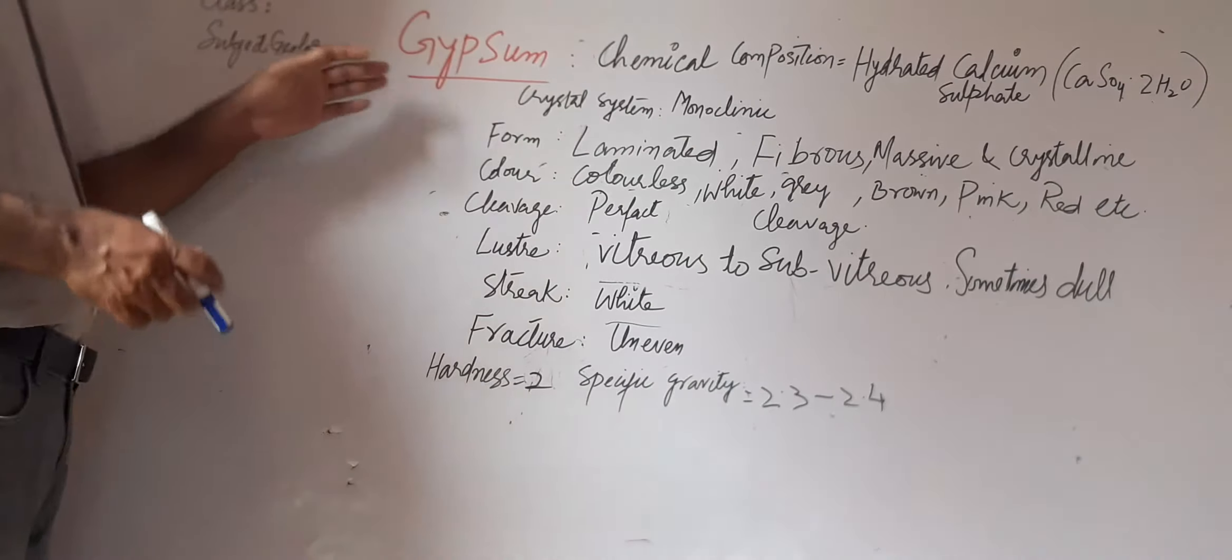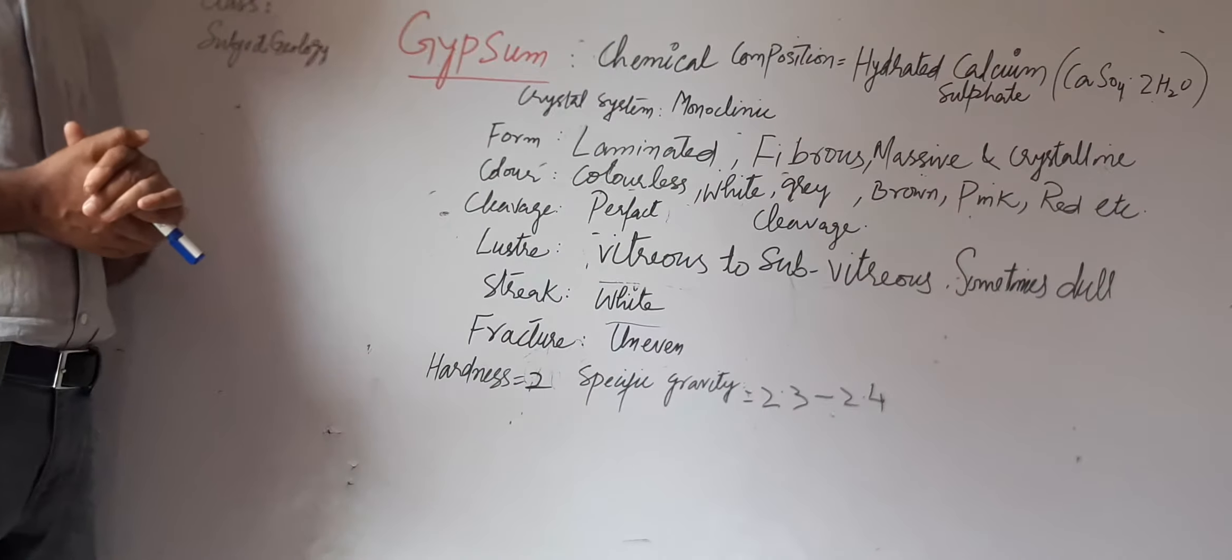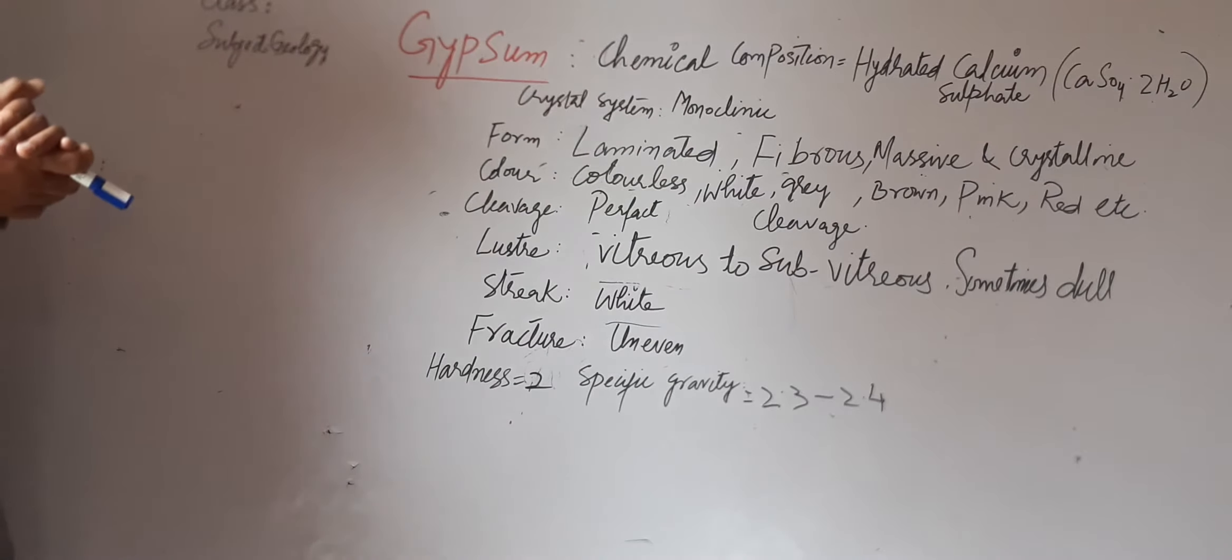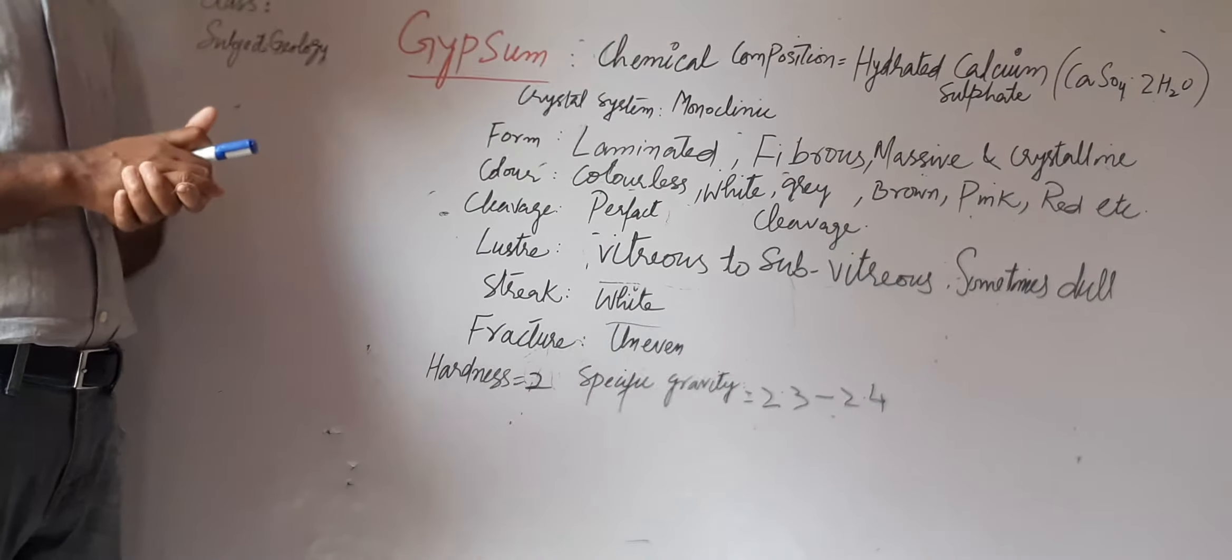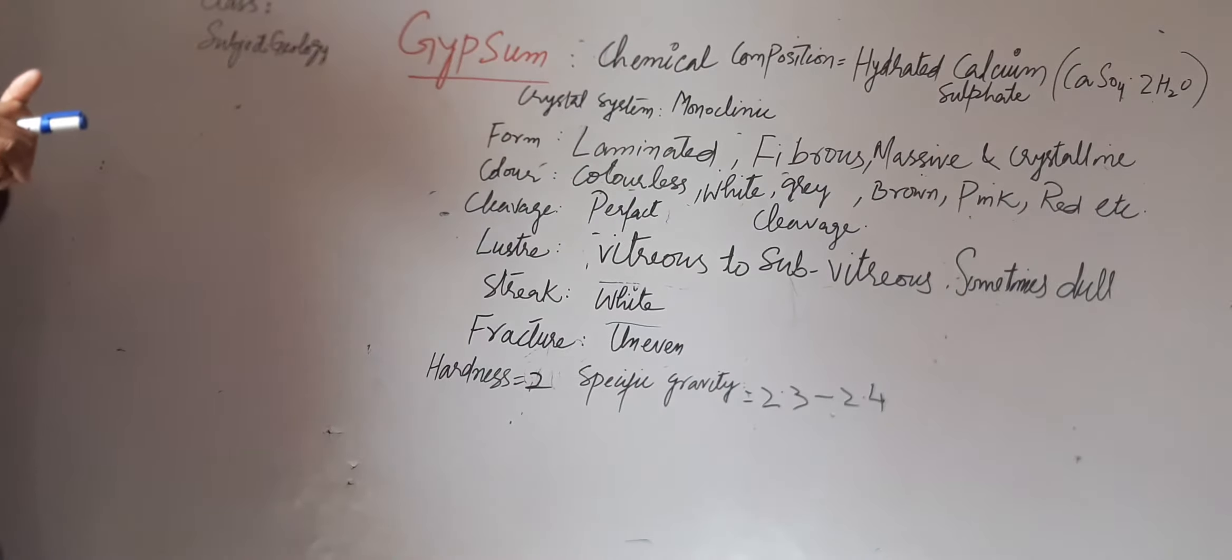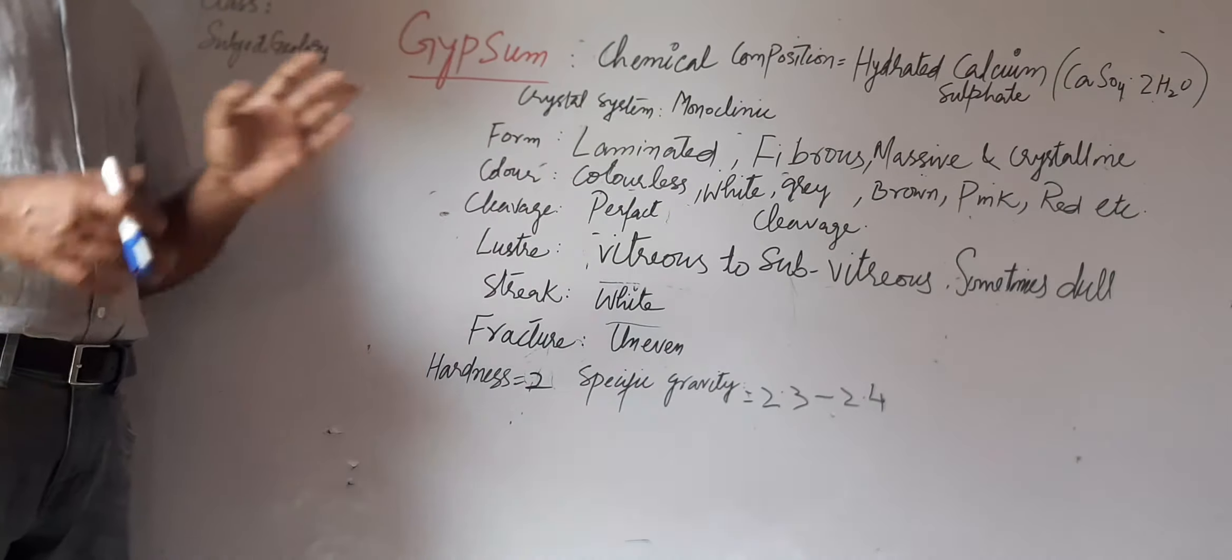Today we will try to know the physical properties of mineral gypsum. The chemical composition of gypsum is hydrated calcium sulphate, CaSO4·2H2O. When we see the crystal system, it is monoclinic.